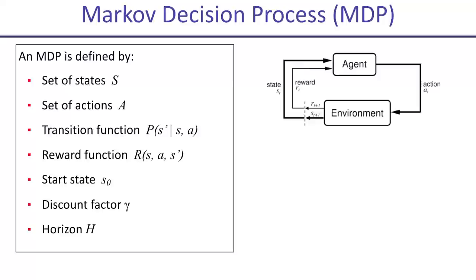A simple way to think of the discount factor is: imagine reward was money. You'd rather have money today than a year from now, because if you had it now, you could earn interest on it. Discount factor gamma corresponds to that — you care more about reward you get now than reward you get later. The horizon is how long you're going to be acting. Sometimes it's infinity, often it's shorter than that.